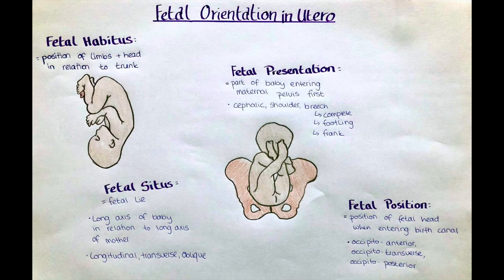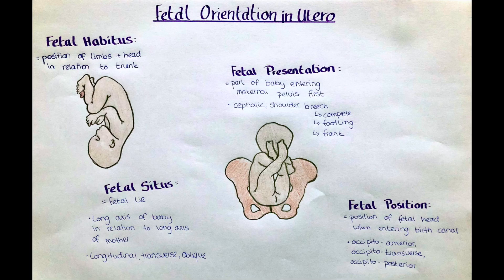The next term is fetal situs, sometimes also called fetal lie. It refers to the long axis of the baby in relation to the long axis of the mother. If the fetal spine is aligned with the mother's spine, we call it a longitudinal lie — this is the case for around 99% of fetuses. Around 1% of fetuses are found in a transverse lie, where the fetal head is positioned at a 90 degree angle to the mother's spine. In earlier stages of pregnancy, the fetus can also be found in an oblique position, but eventually, latest during labor, this will change either to a transverse or longitudinal lie.